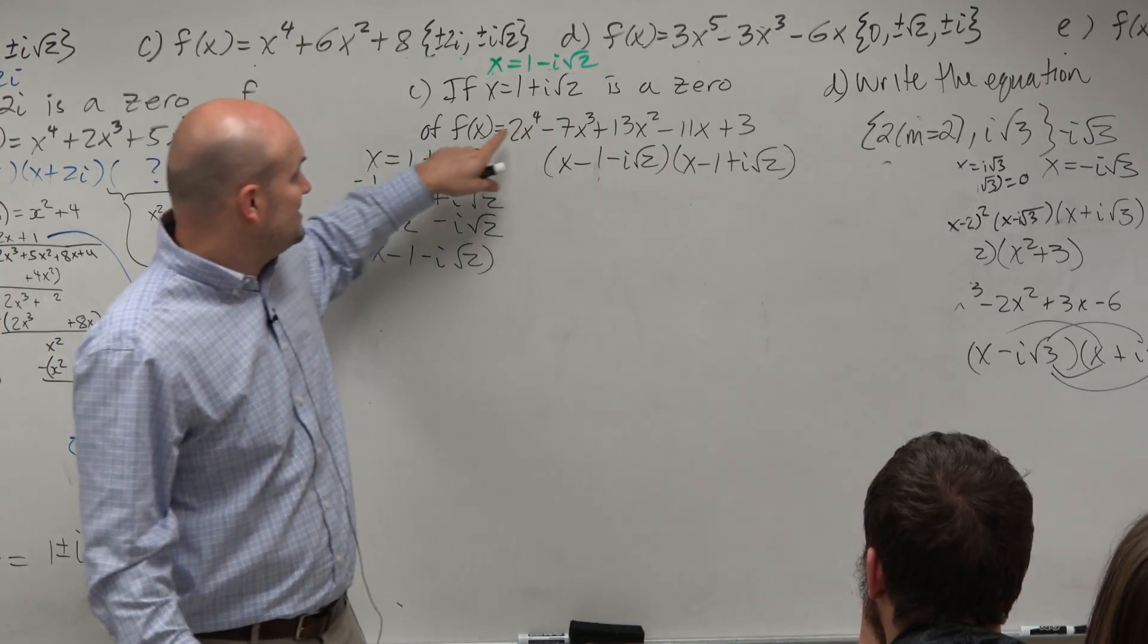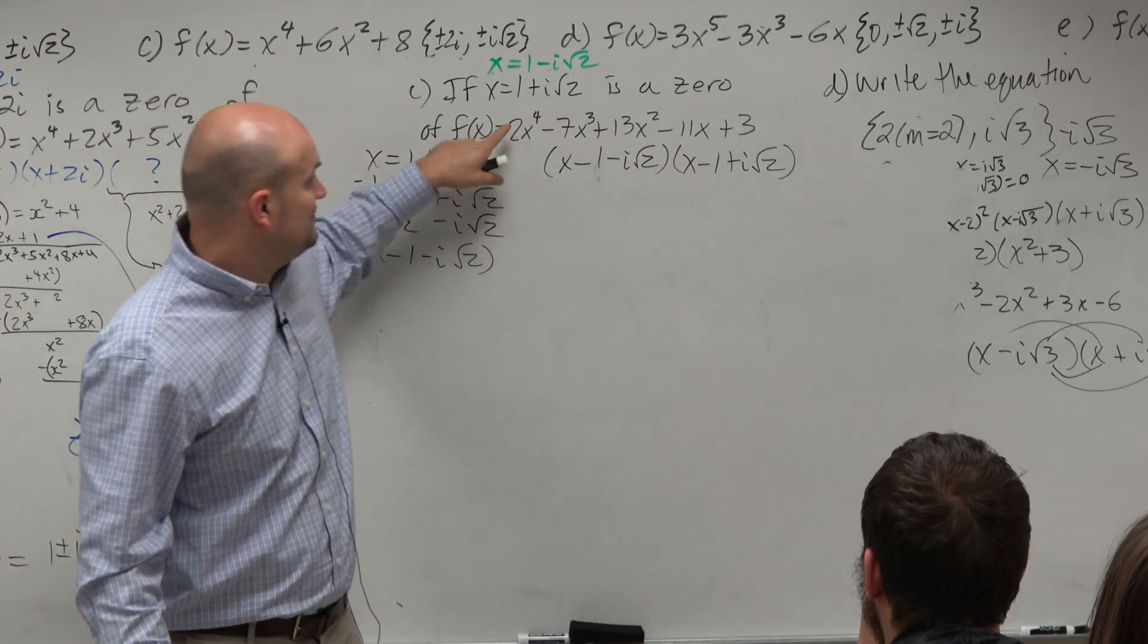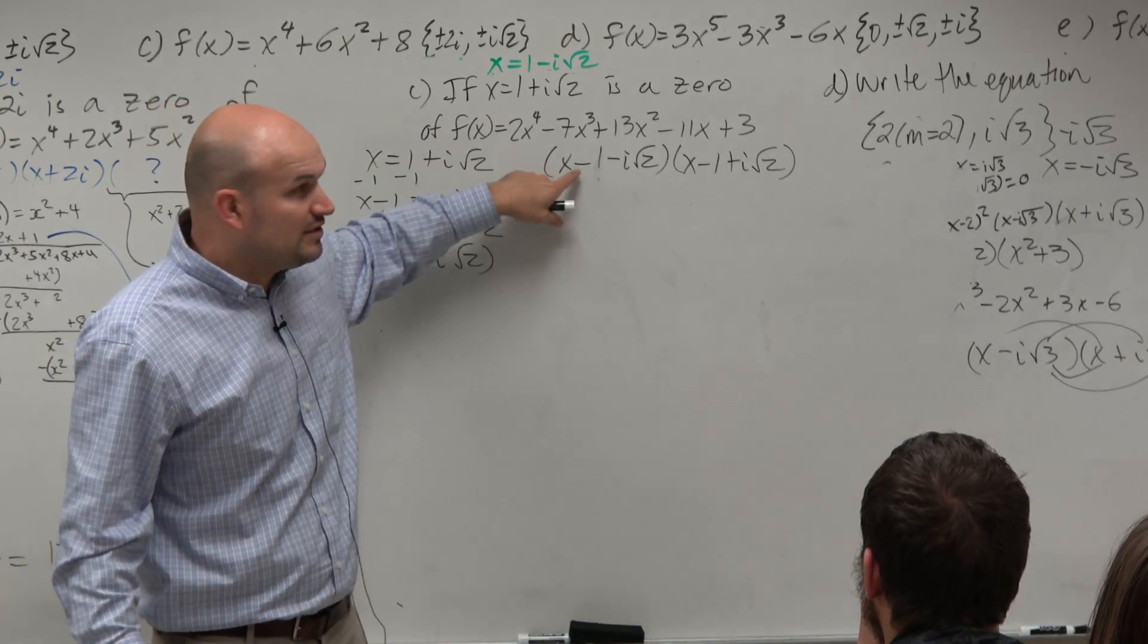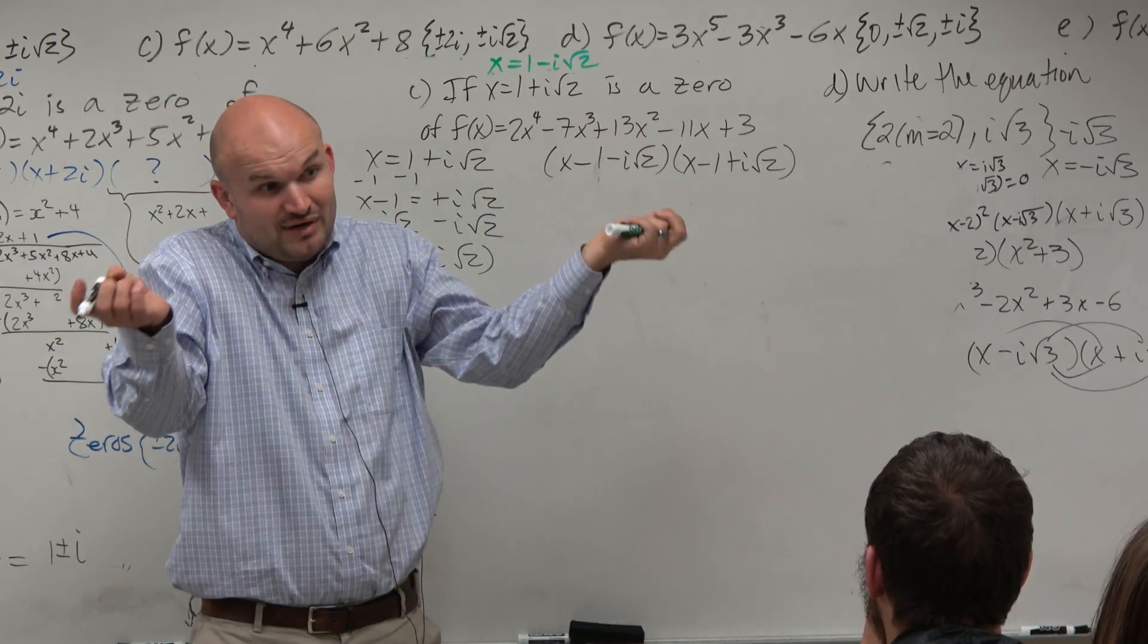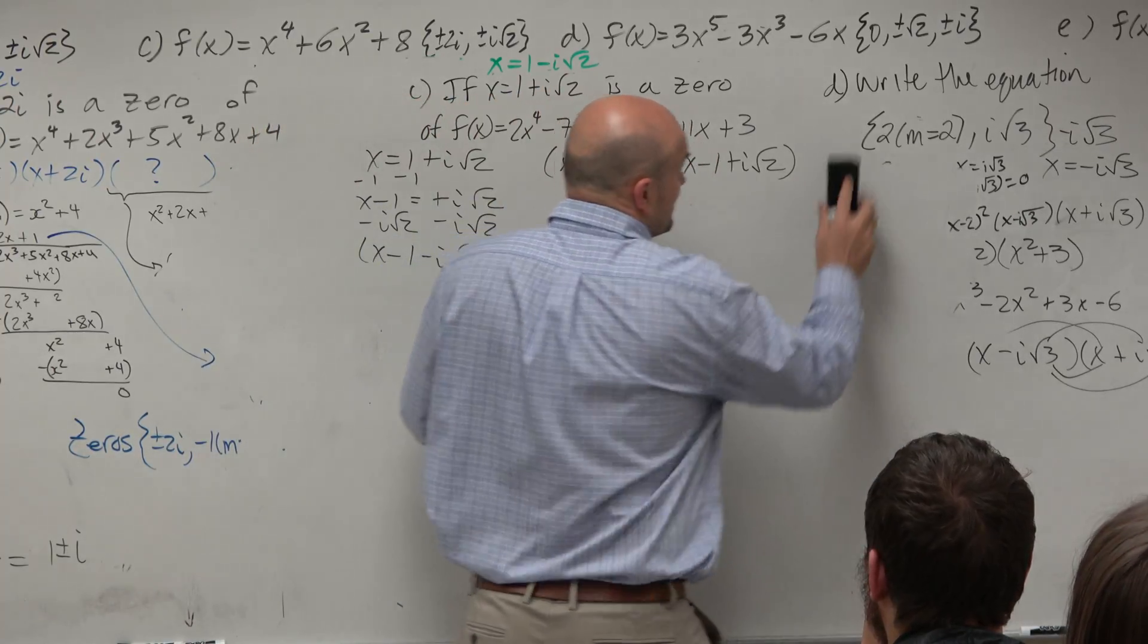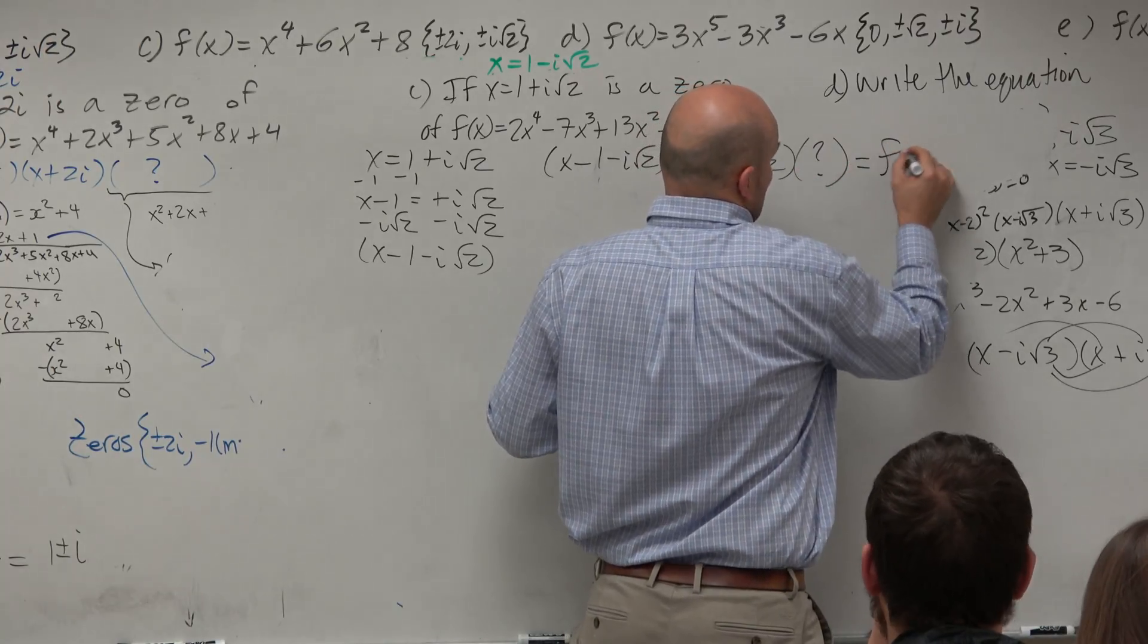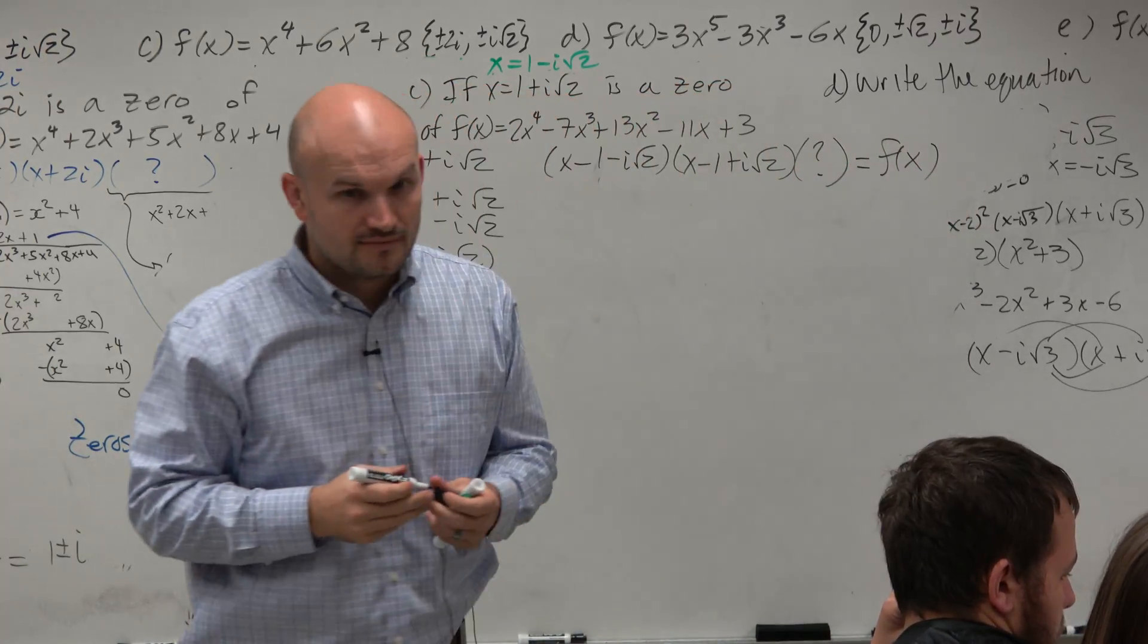Now, does this times this give you your function f of x? Does this times this give you x to the 4th? No, there's only one x there. x times x is going to give you an x squared. So that means this times this times something else equals f of x.